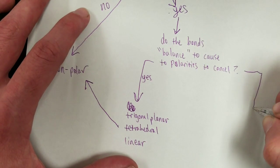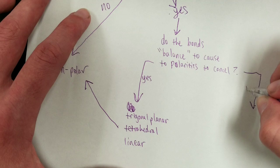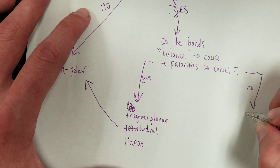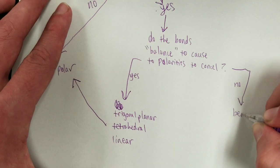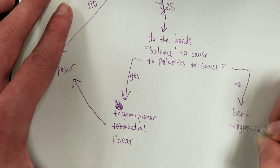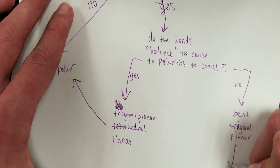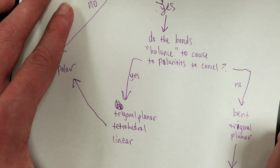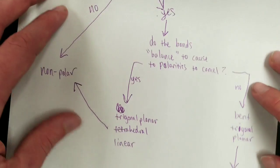If no, the polarity doesn't cancel. That means it has a bent or trigonal pyramidal shape. And that means polar molecule, because the polarity fails to cancel away. So that's the zoomed-in version.